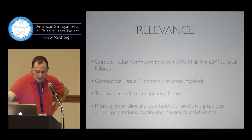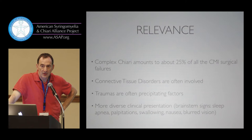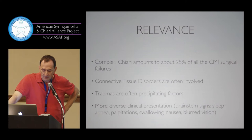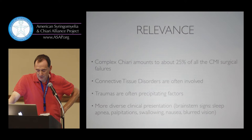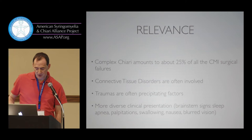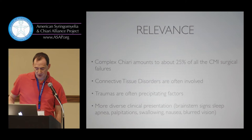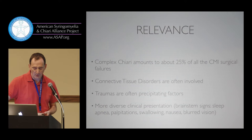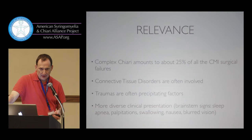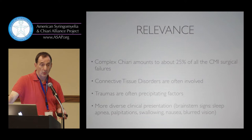What is the relevance? Complex Chiari amounts to about 25% of all surgical failures of Chiari malformation — these are widely accepted figures in the Chiari community. Connective tissue disorders are often involved; our group first described them in 2004, published in 2006. Traumas are often precipitating factors — they're not really the cause, they don't cause fracture or subluxation, but they hit a target which is already fragile, congenitally, for bony or ligamentous structure.